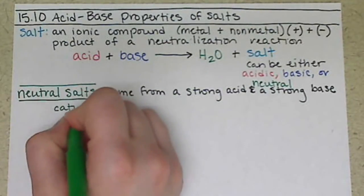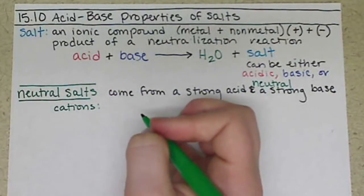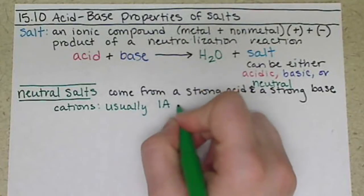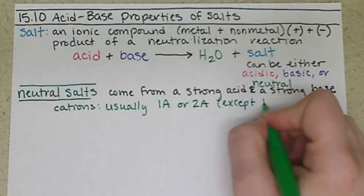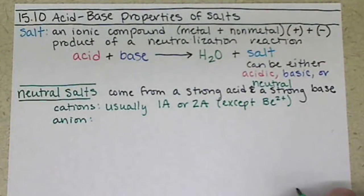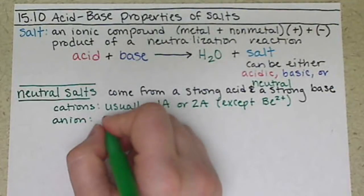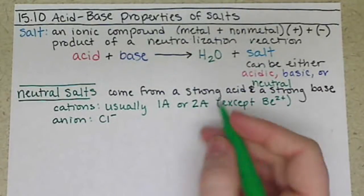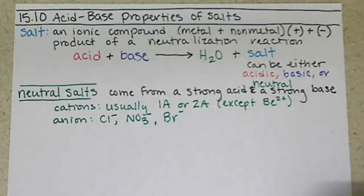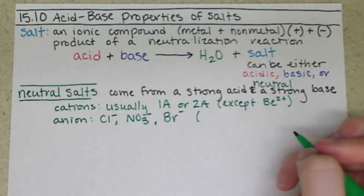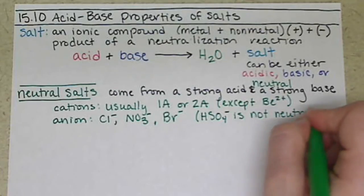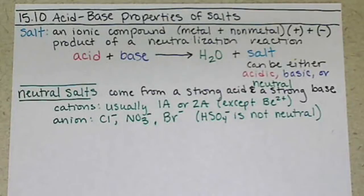So for neutral salts, our cations come from a strong base, so basically that's something with hydroxide, and usually that's going to be something from group 1A or 2A, and that's except beryllium ion. The anion for neutral salts is going to come from a strong acid, it's the conjugate base of a strong acid. So we have HCl as a strong acid, so we'd have the chloride ion for the anion. Nitric acid would give us the nitrate ion, bromide ion. Sulfuric acid is a strong acid, but HSO4- is not neutral. And that's because it itself is a weak acid, so it will donate that second proton.